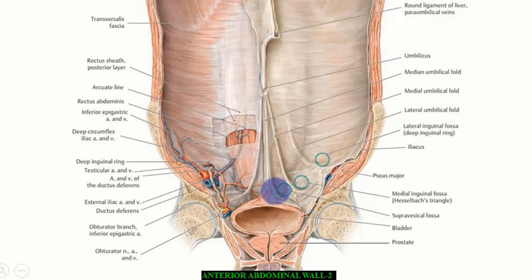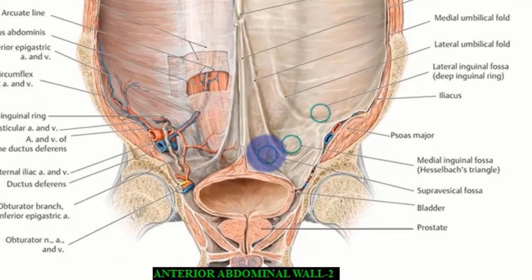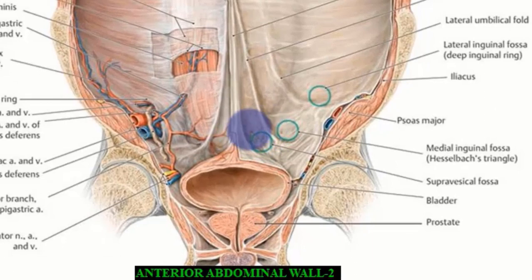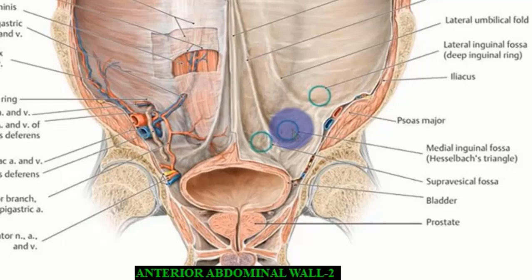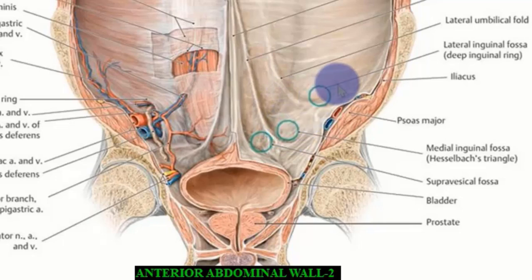The fossae include the supravesical fossa, located between the median and medial umbilical folds, and the medial inguinal fossa — commonly known as Hesselbach's triangle — found between the medial and lateral umbilical folds. The lateral umbilical fossa is found lateral to the lateral umbilical fold.